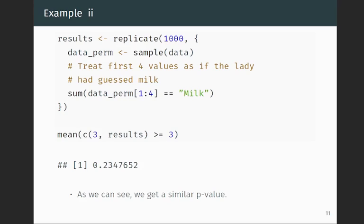And so we know that what we're looking for is the frequency of how many times we got three or four. So we can get this via permutation p-value. So remember, we're taking the sample mean of the vector three, which is the value we observed, comma results, which is all of the values from the permutations. And then we're counting the proportion of how many of those are greater than or equal to the observed value three.